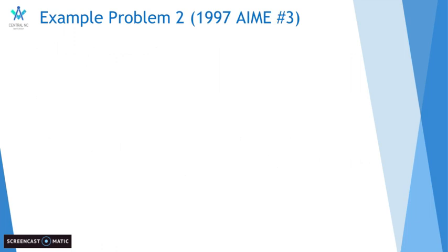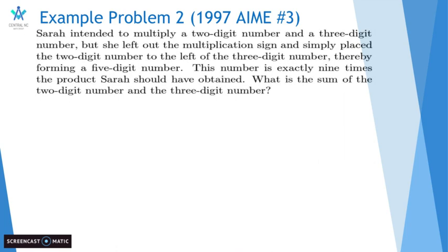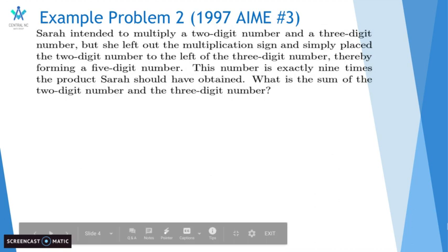Example problem number 2, 1997 AIME number 3. Sarah intended to multiply a 2-digit number and a 3-digit number, but she left out the multiplication sign and simply placed the 2-digit number to the left of the 3-digit number, thereby forming a 5-digit number. This number is exactly 9 times the product Sarah should have obtained. What is the sum of the 2-digit number and the 3-digit number?